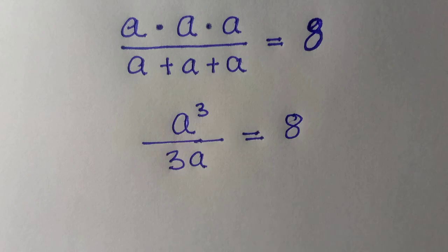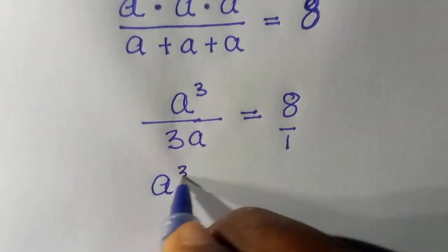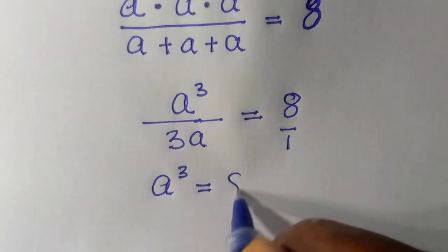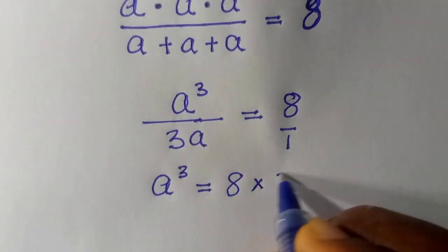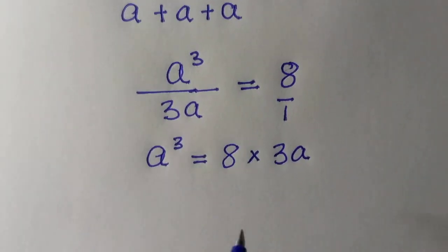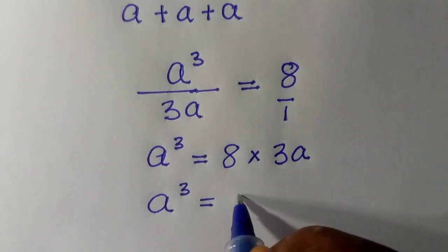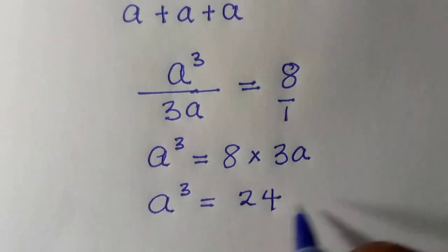So we have to cross-multiply. In cross-multiplying, we have a raised to the power of 3 equals 8 multiplied by 3a. So 8 multiplied by 3a gives us 24a.